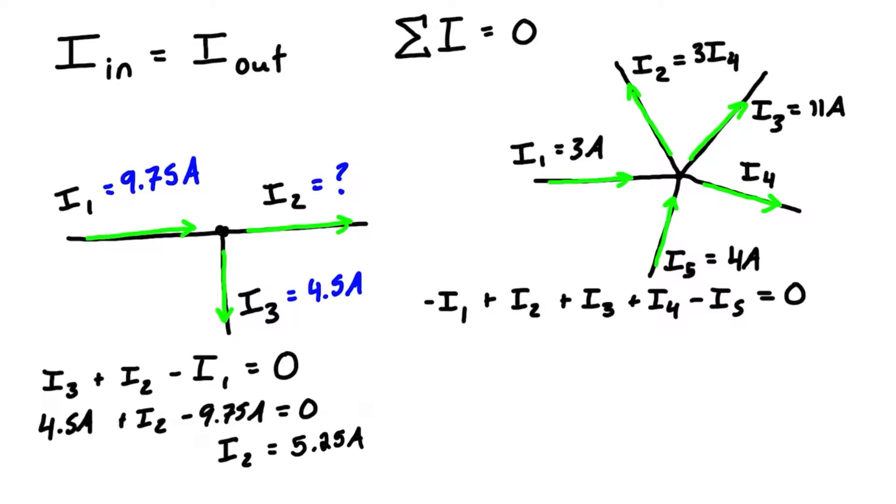We know some of the values: i1 is -3 amps, i2 is positive but equal to 3i4 so let's put that in now, i3 is +11 amps, i4 is unknown so we'll just leave it as is, and i5 was given as -4 amps. That's equal to zero.